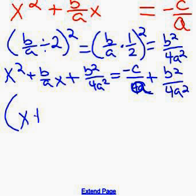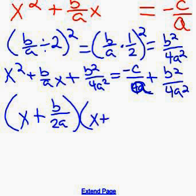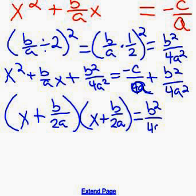Then you factor the left side. So x plus b over 2a and x plus b over 2a equals b squared over 4a squared minus c over a. And then I'm going to rearrange the right side with the commutative property, which is b squared over 4a squared minus c over a.